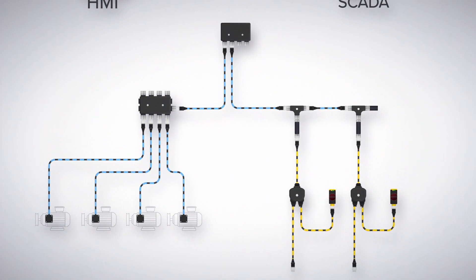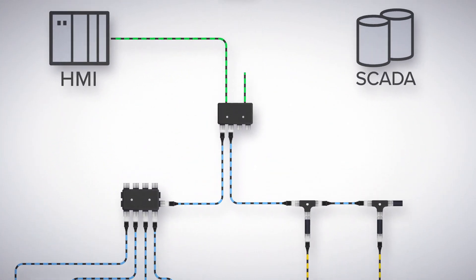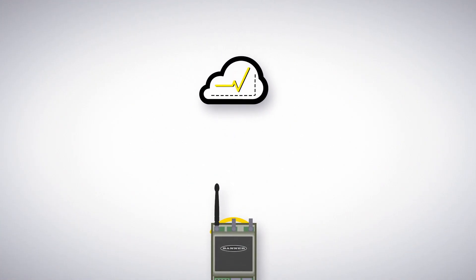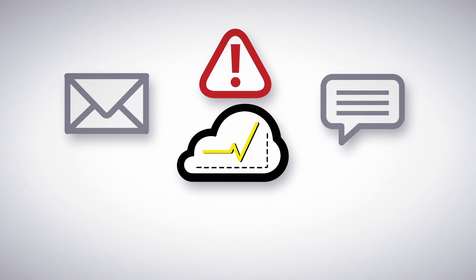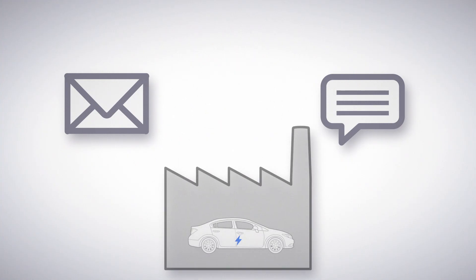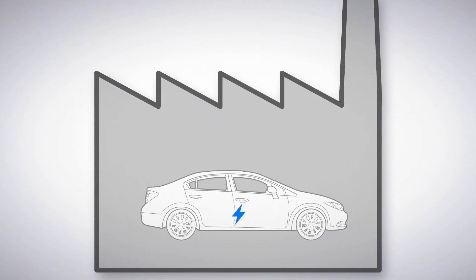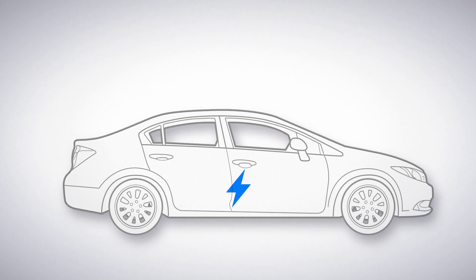Once critical factory data is gathered, it can be sent to an HMI, SCADA system, or cloud platform. And alerts can be sent to notify staff of productivity changes or reliability issues, allowing further optimization of EV manufacturing processes.